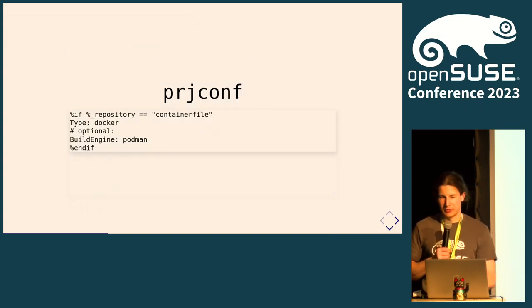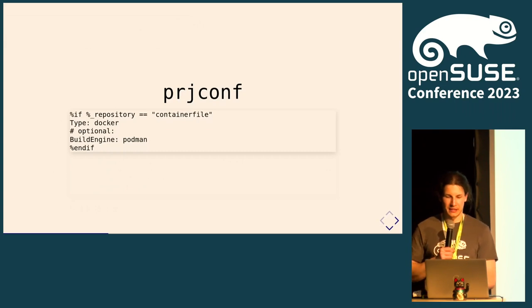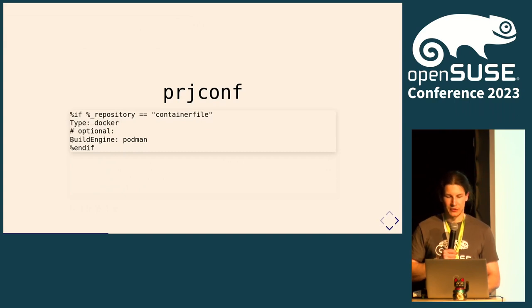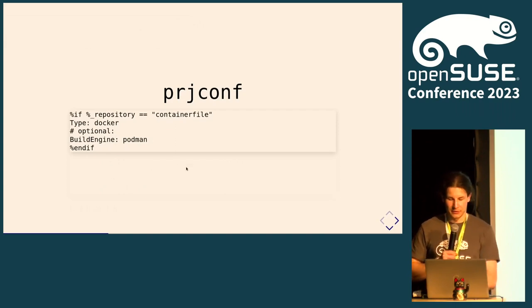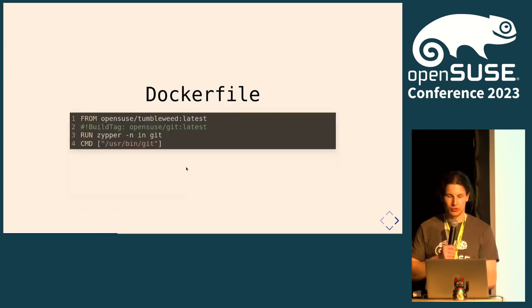For building containers you don't necessarily need a project config setting. You can set the repository type to Docker, and also define whether OBS will use Docker or Podman — by default it uses Docker, but you can tell it to use Podman for building. Then you can just create a Dockerfile.